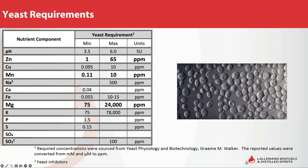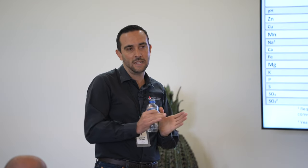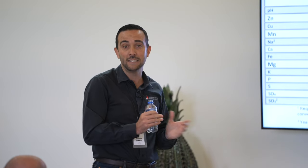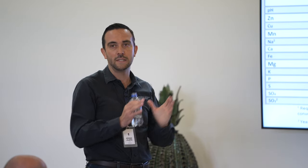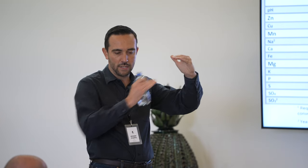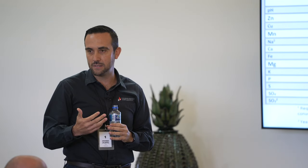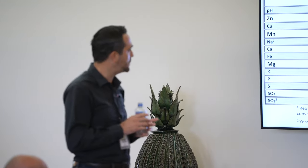Zinc is very important and we are finding a lack of this nutrient in our must — coming from the raw material. With younger agaves, say four years old or less, we don't find zinc in those quality agaves. Manganese is very important to complete the pathway from sugar to ethanol. Magnesium is a micronutrient the yeast cell requires to avoid stress. We are going to talk about stress factors — it's very important to keep the cell happy.